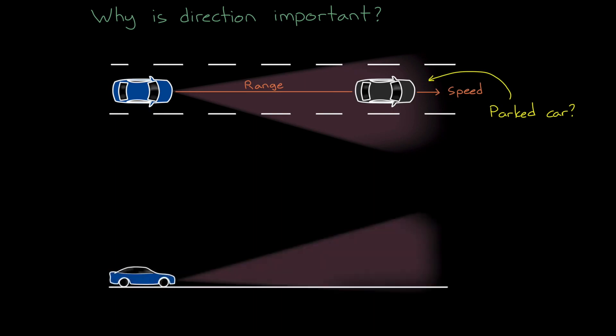But elevation angle determination is equally important. A vehicle would like to know if a stationary object is from a stopped car or from an overpass. And beyond just detecting a single object in azimuth and elevation, the radar system should be able to resolve two or more objects in the same scene and be able to distinguish one from the other.